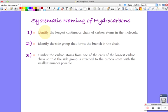The steps are: firstly, identify the longest continuous chain of carbon atoms in the molecule, and that gives us its basic name. Then identify any side groups that form a branch in the chain. Count using numbers starting at one end of the longest carbon chain so that the side group is attached to the carbon atom with the smallest number possible.